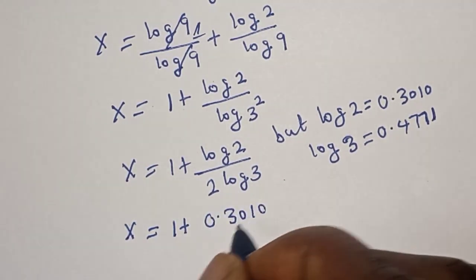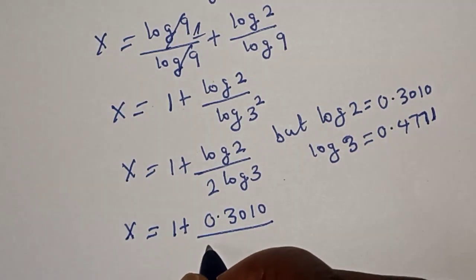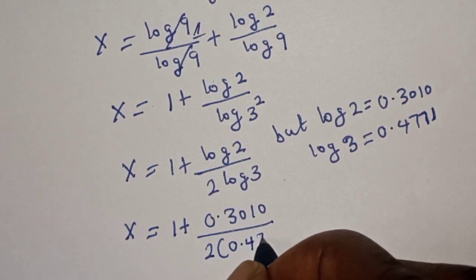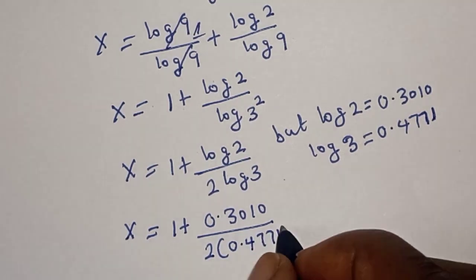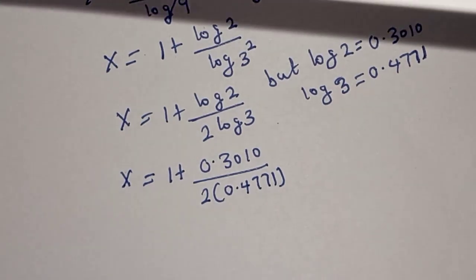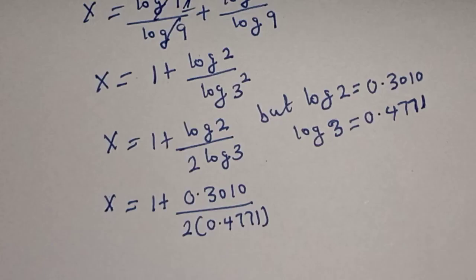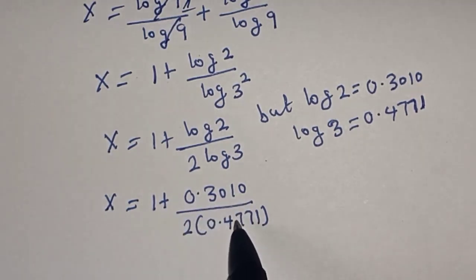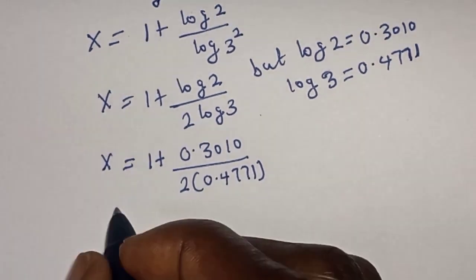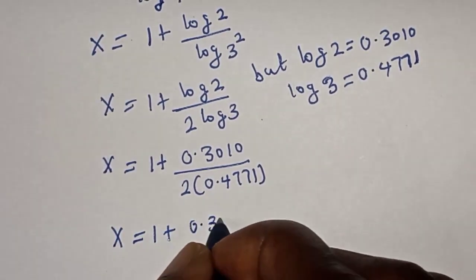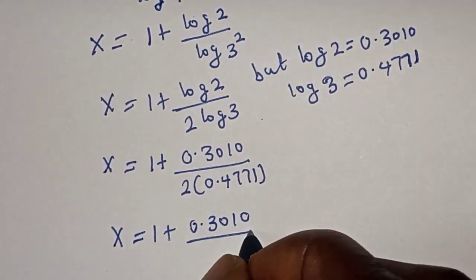Now substituting numerical values: log 2 is equal to 0.3010 and log 3 is equal to 0.4771. So s is equal to 1 plus 0.3010 over 2 multiplied by 0.4771.